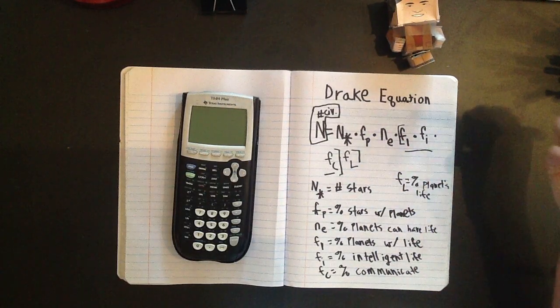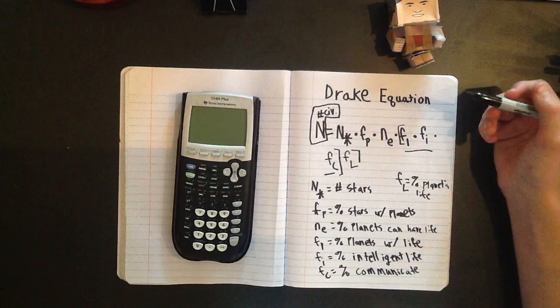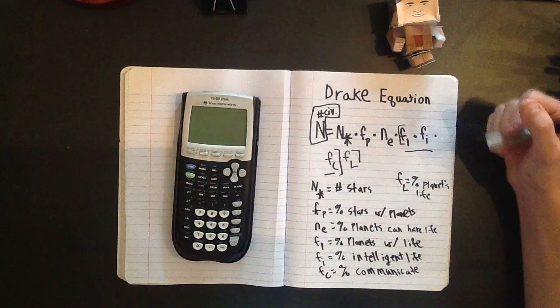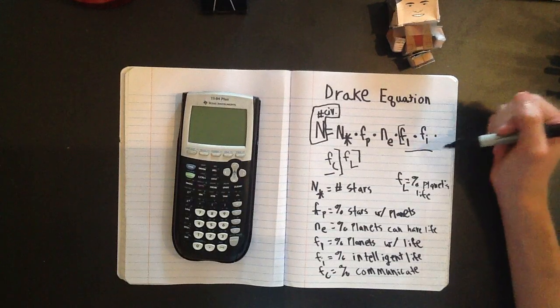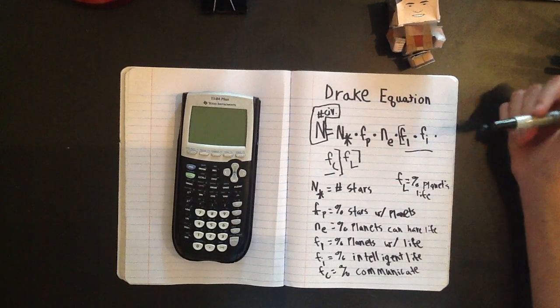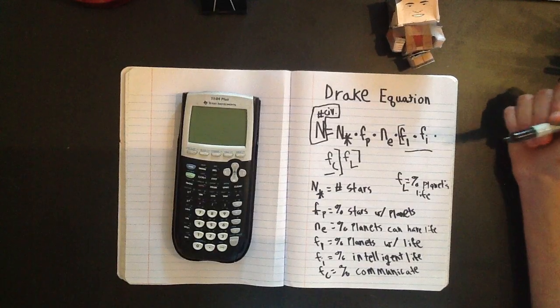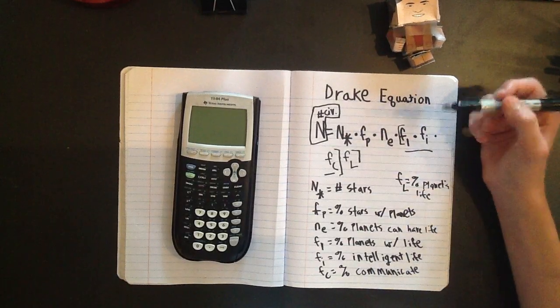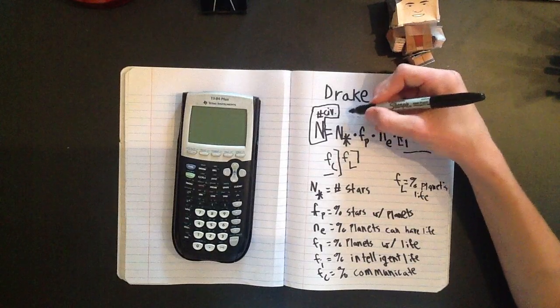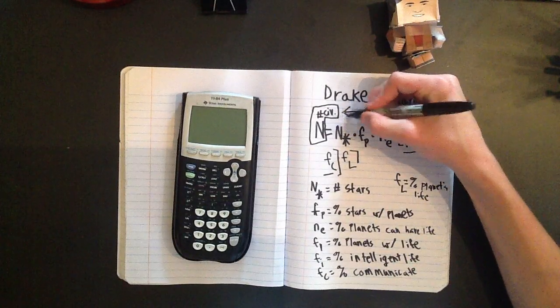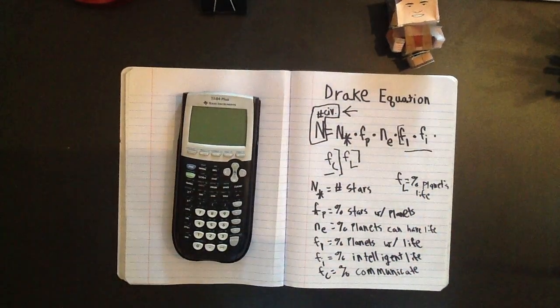So how are we supposed to know? Now it could be 100% of all planets have life, or it could be only one in a billion. So it takes a lot of estimation to do this equation. But in order to find out what my answers are, click here. I'll see you there.